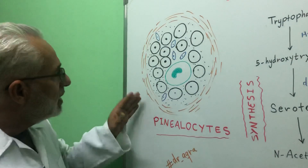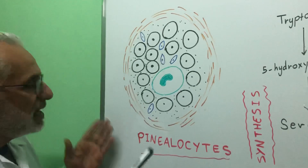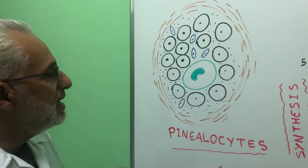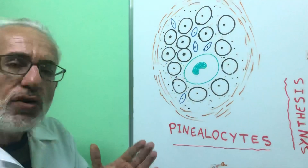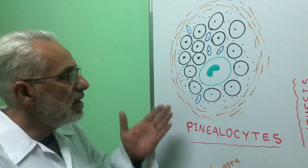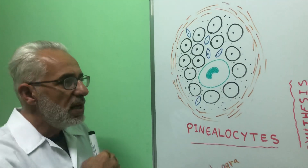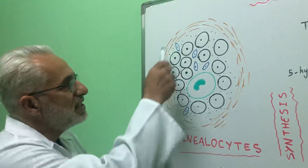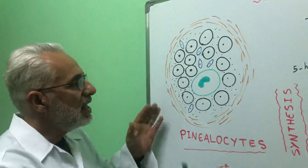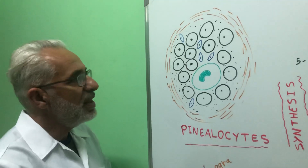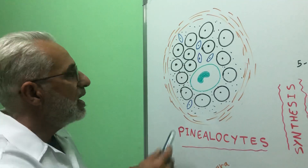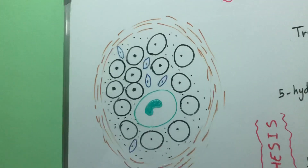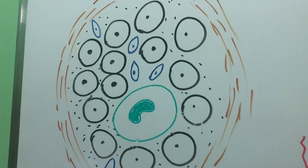The interesting fact about the pineal gland, found as mentioned in the epithalamus, is that it has the same embryological origin as the brain, but with further development it loses its attachment to the brain and becomes an independent gland that contains glandular cells — seen here in black color — which are called pinealocytes.